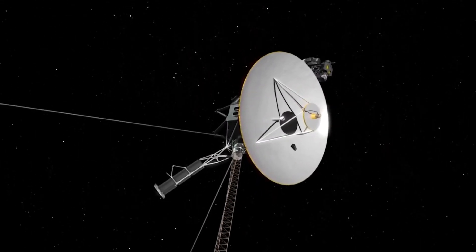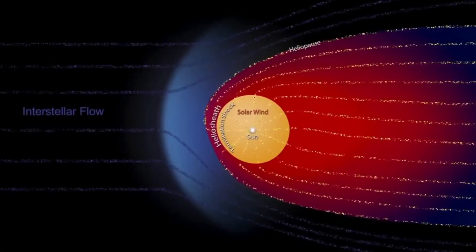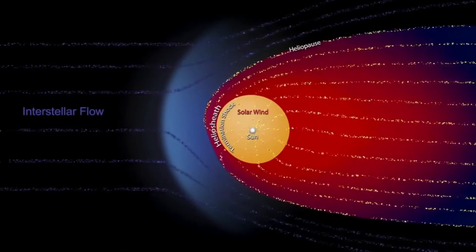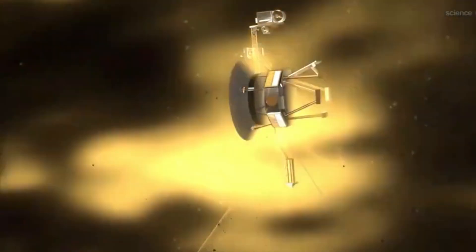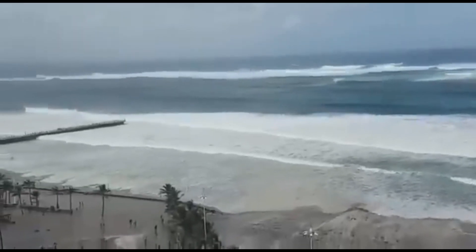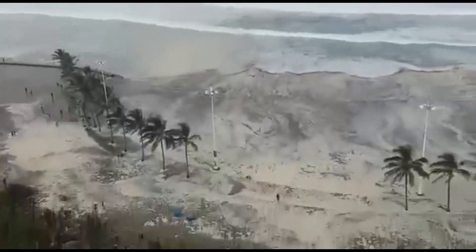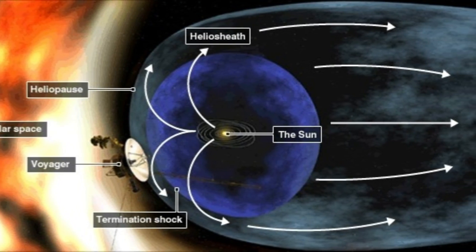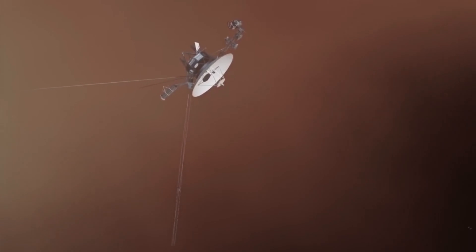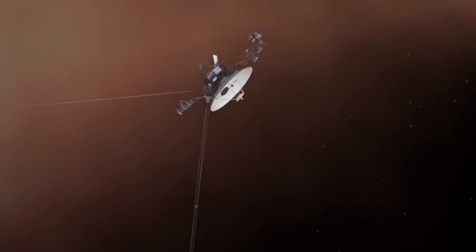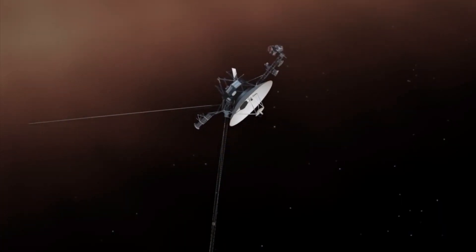Voyager 1 reached the termination shock first, the region where the solar wind slows dramatically as it begins to encounter the pressure of interstellar gas. It's like arriving at a shoreline, where the waves begin to break and churn. Beyond that lay the heliosheath, a zone of turbulence, of swirling plasma and tangled magnetic fields. Voyager's instruments recorded something utterly new, a rise in temperature and density. The smooth solar wind was gone. In its place was chaos.